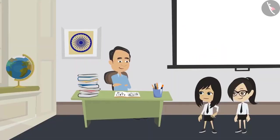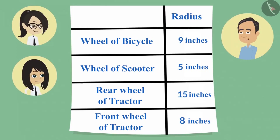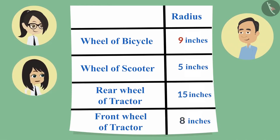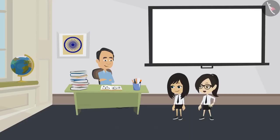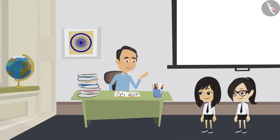Now I can tell whether the front wheel of the tractor is bigger or the wheel of the bicycle. Please tell. Sir, the wheel of a bicycle is bigger because its radius is 9 inches, which is more than the radius of the front wheel of the tractor, which is 8 inches. This means when we know the radius or diameter of a circle, we can tell whether it is big or small without looking at the circle. Yes, absolutely correct.